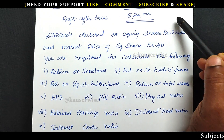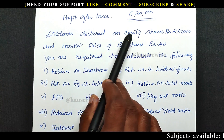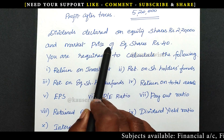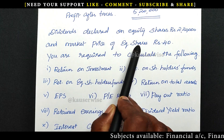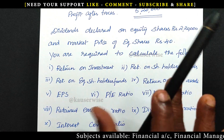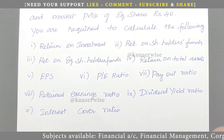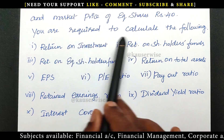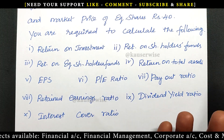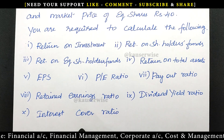Now see the adjustments. Dividend declared on equity shares: 2,20,000 and market price of equity shares: rupees 40. So these are the information given in the problem. So far we have calculated four ratios based on returns in the previous video. Now we are going to calculate the remaining ratios.